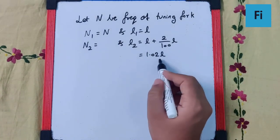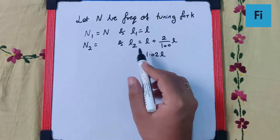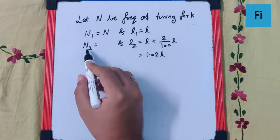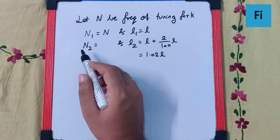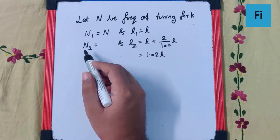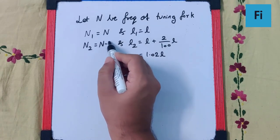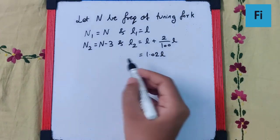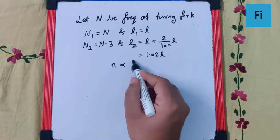When the length increases, the frequency decreases. They say it's three beats per second, so I can say N minus 3. Now we know the frequency is inversely proportional to the length,